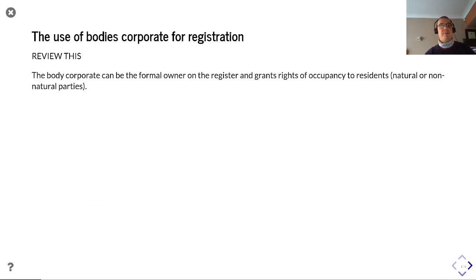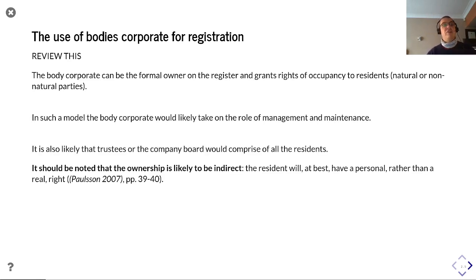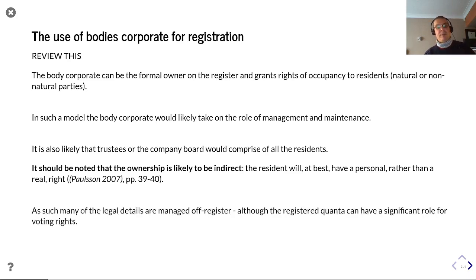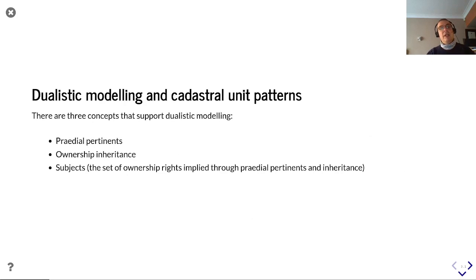In the monistic approach, the flat owners become part of the vehicle for the body corporate to own the land. The body corporate can become the formal owner on the register and grants rights of occupancy to residents — natural or non-natural parties. In such a model, the body corporate would likely take on the role of management and maintenance, and the trustees or company board would comprise all residents, as shown clearly in the New Zealand legislation. It should be noted that ownership is likely to be indirect: residents will at best have a personal rather than a real right, and many legal details are managed off-register, although the registered quantum can have a significant role in terms of voting rights.